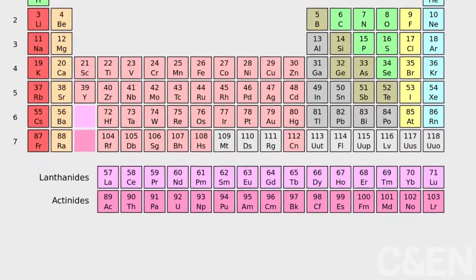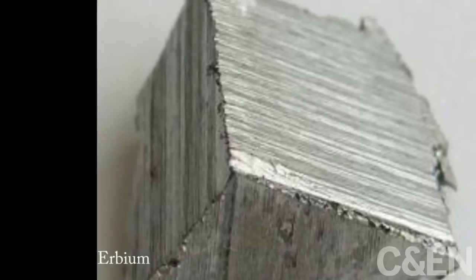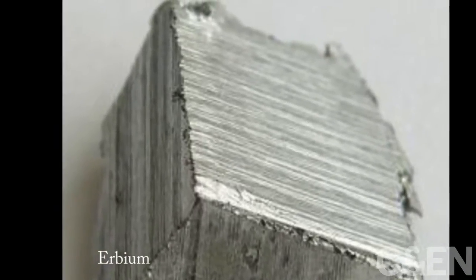The lanthanides are a group of elements located all the way near the bottom of the periodic table. Often called rare earth elements, they're silvery solids that melt at high temperatures.